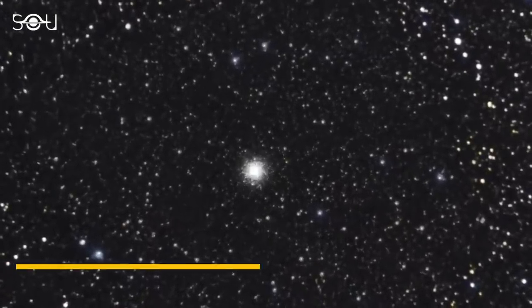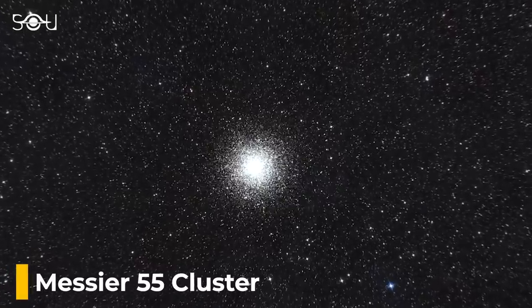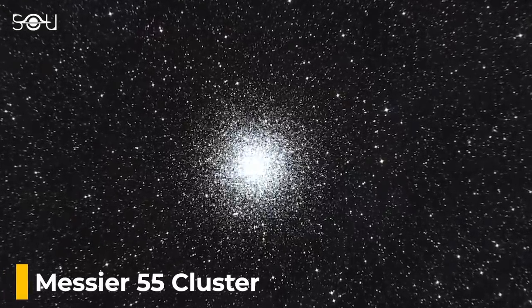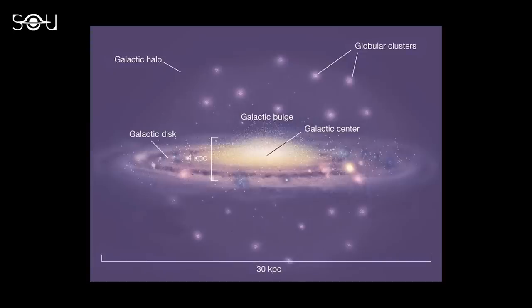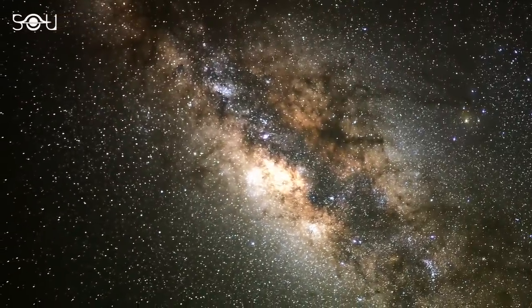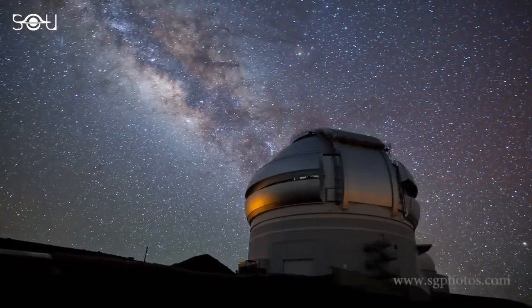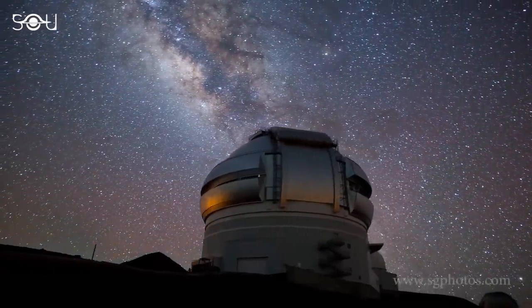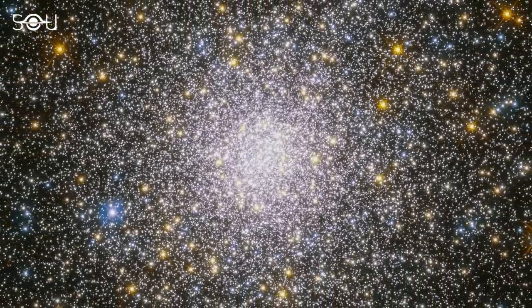Globular clusters, on the other hand, are much bigger and compact. They can contain millions of stars tightly bound by gravitational force. These clusters are found in nearly all galaxies. In spiral galaxies such as the Milky Way, globular clusters are located in the galaxy's halo, or the outer spheroidal part. We know of about 150 such clusters in our galaxy, and there could be more. Despite being the subject of very active research for decades, we do not know when or how these globular clusters form.